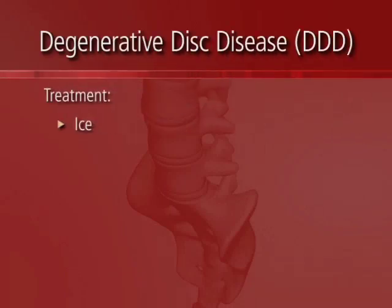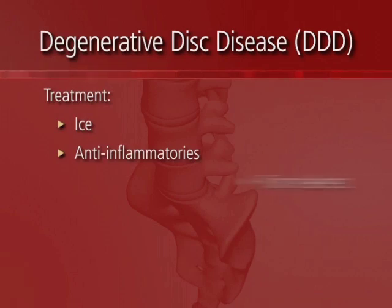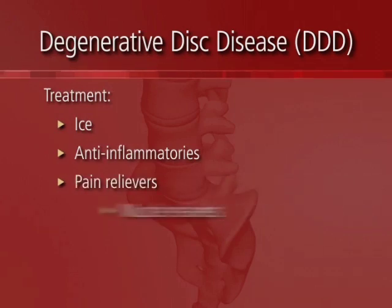Treatment options vary and cover the entire spectrum of lower back care, because the main question is: what is the pain generator, what's the source of the pain? The DDD label is not a pain source — the question is whether someone is suffering from disc pain, joint pain, or muscle pain, and those treatments may vary. Typically we'll use some ice, anti-inflammatory medications, pain relievers, and muscle relaxers, all designed to treat the symptoms.